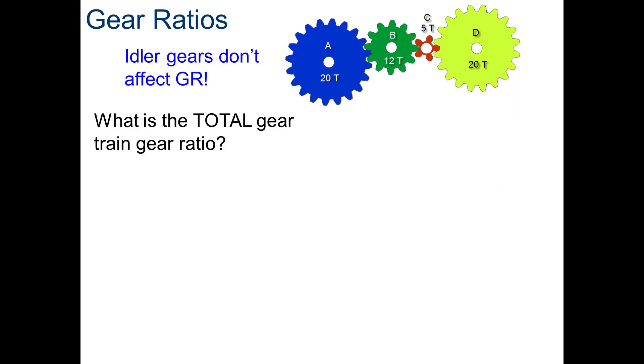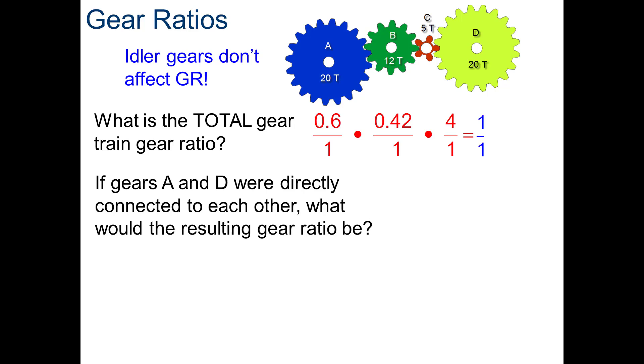Now, the total gear ratio here, we could do as 0.6 times 0.42 times 4, which equals 1. Now, in a simple gear train like this, where each gear mates with the next, we can look at the gear ratio between the gear in, which is A, and the gear out, which is D. And as you can see, if you were to calculate that gear ratio, D being your out gear, A being your in gear, so D divided by A, 20 divided by 20 equals a gear ratio of 1 to 1.